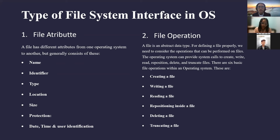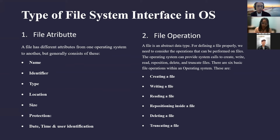Second, we have file operations. A file is an abstract data type. For defining a file properly, we need to consider the operations that can be performed on files. The operating system can provide systems to create, write, read, reposition, delete, and truncate files. There are six basic file operations within an operating system: creating a file, deleting a file, and truncating a file.